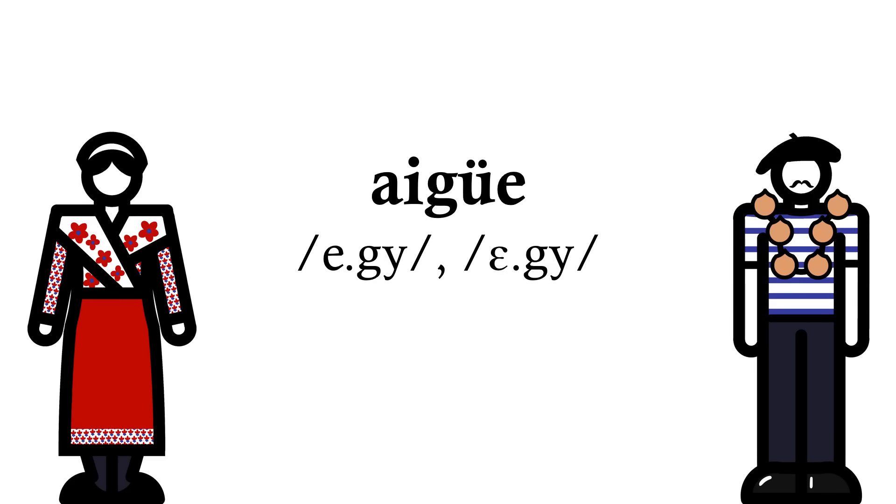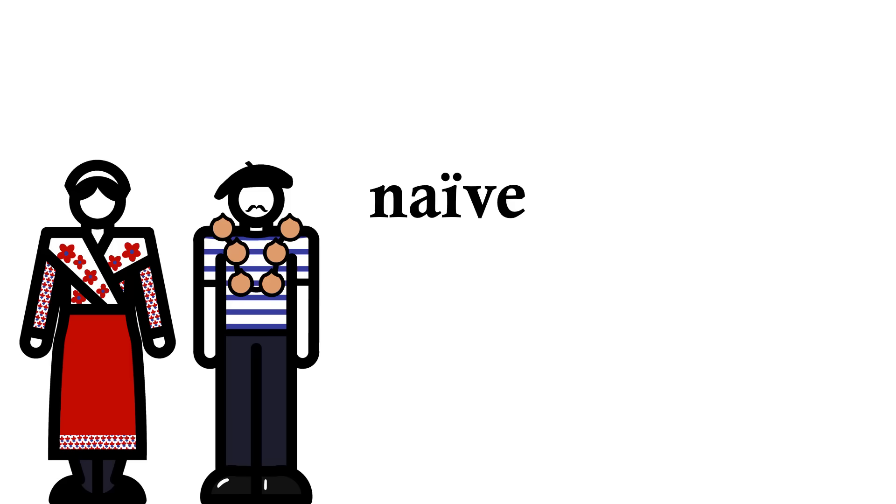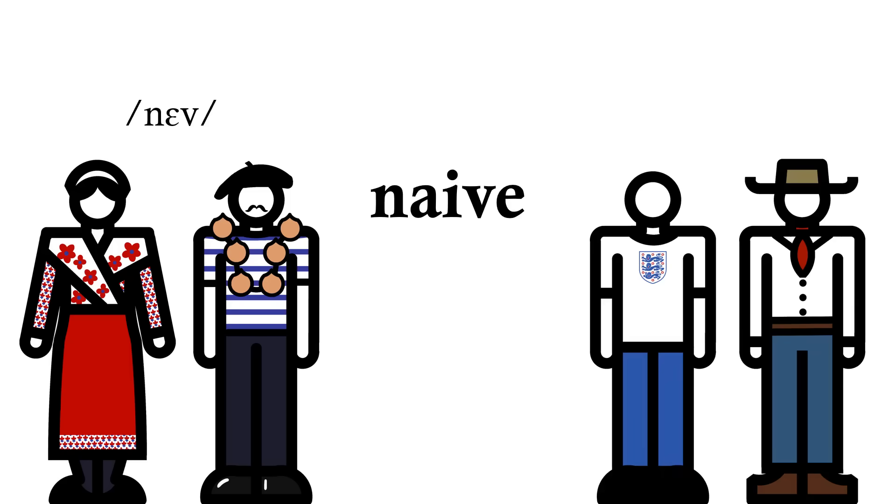The Dieresis marks where a letter should be pronounced separately from its environment. Another example of this would be the word naïve in both French and its usual spelling in English. Instead of being naïve or naïve, with those letters forming a digraph or diphthong respectively, the I is pronounced on its own in a new syllable. Naïve.